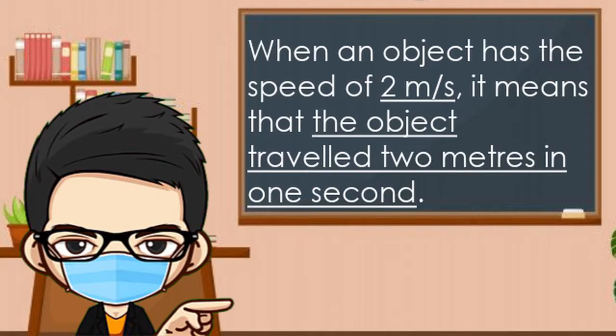When an object has the speed of 2 meters per second, it means that the object traveled 2 meters in 1 second.